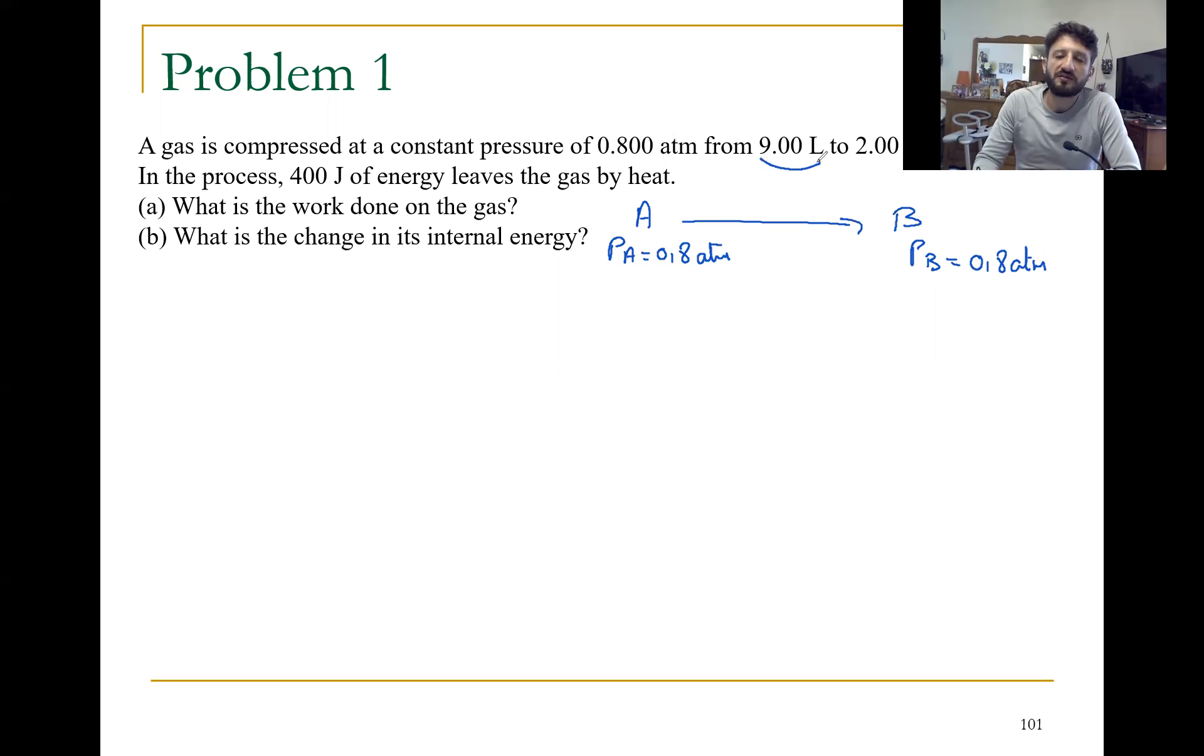Initially we have a volume VA equals 9 liters. We decrease the volume to VB equals 2 liters. In the process we have 400 joules of energy leaves the gas by heat, so Q equals 400 joules. Let me explain, we have many points to explain.